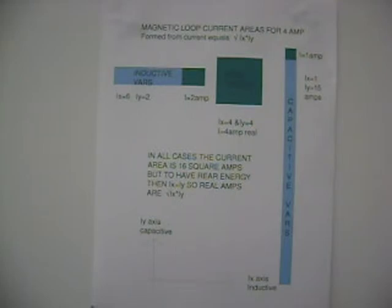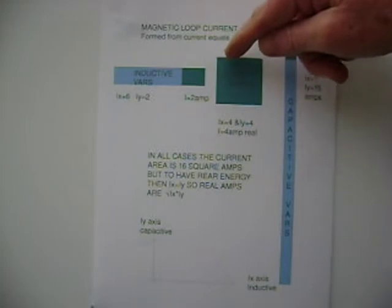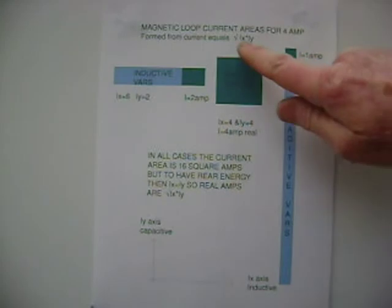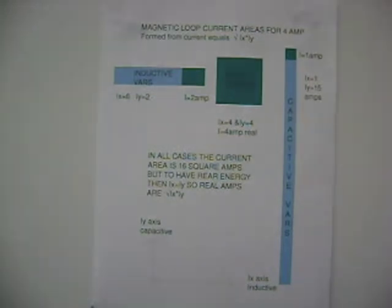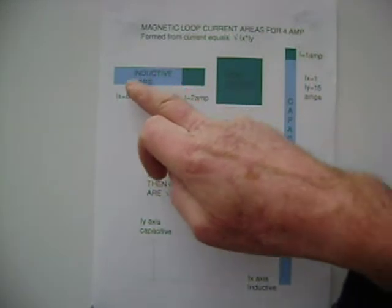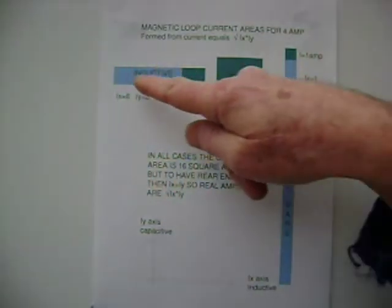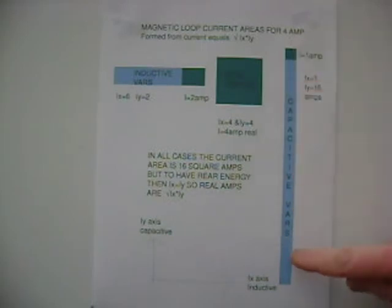We know from electrical formulas that for real current, ix must equal iy. So in this example, you would have four amps of inductive and four amps of capacitive current. When you multiply ix times iy and take the square root, you get the ordinary current we speak of as normal current. Any leftover is inductive in the x-direction, or capacitive as shown.